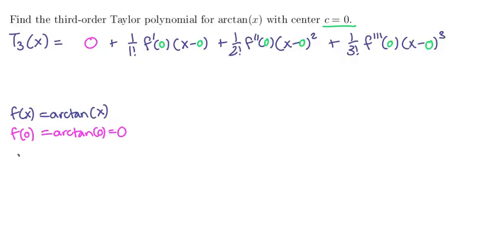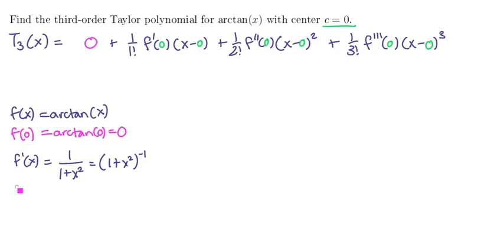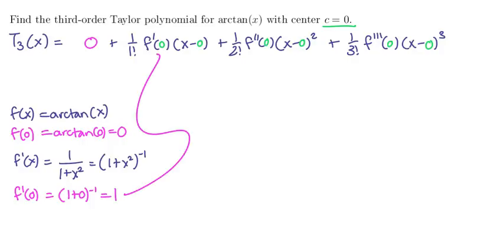Next, let's take a derivative. f prime of x is going to be 1 over 1 plus x squared, the derivative of the arctangent, or 1 plus x squared to the minus 1. If we plug in 0 we get f prime of 0 is equal to 1 plus 0 to the minus 1, which is just 1. And that's this coefficient here.